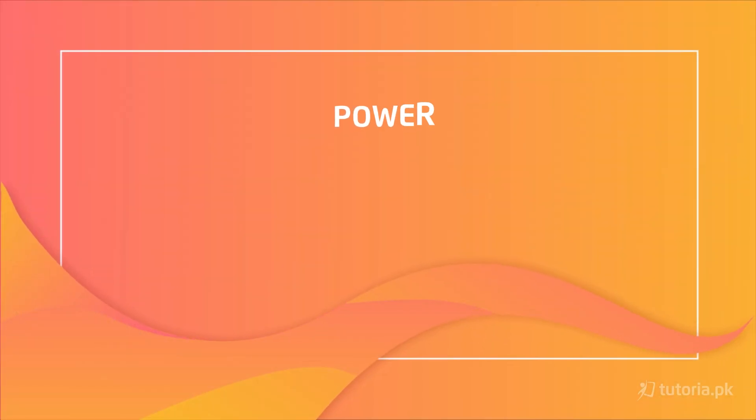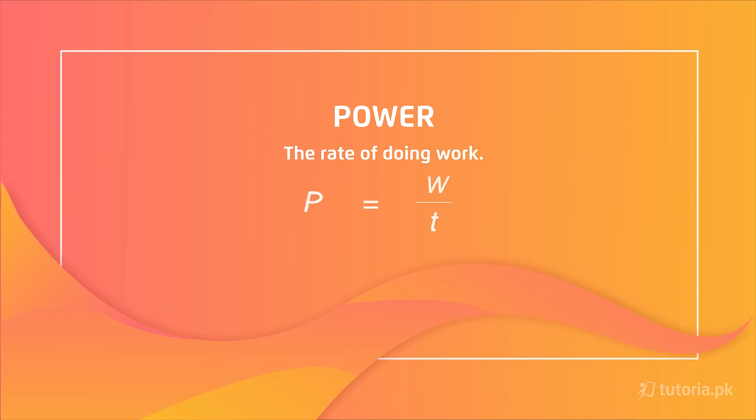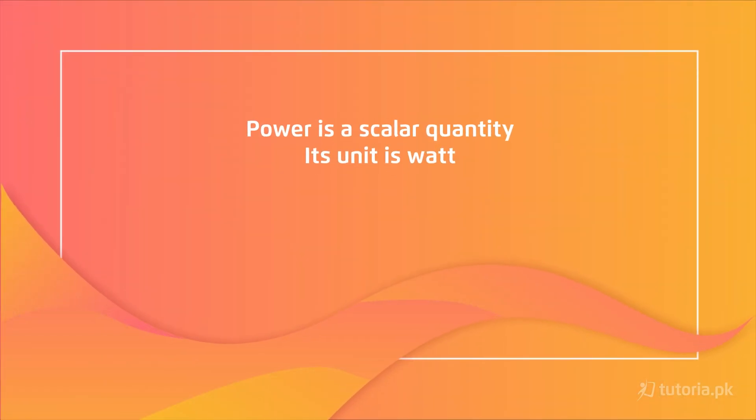One more thing that physicists consider very important is power. Power is defined as the rate of doing work. Mathematically, power equals work done divided by time taken. If two people have the same amount of work to perform but one completes it faster and the other takes, say, 5 hours, the different time for the same work done means they have different power. Power is a scalar quantity and its unit is the watt.